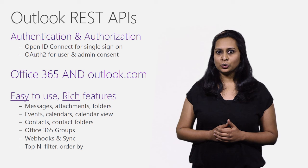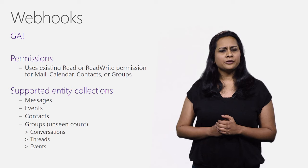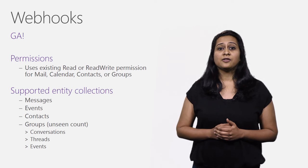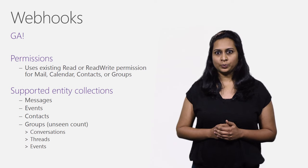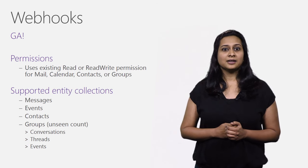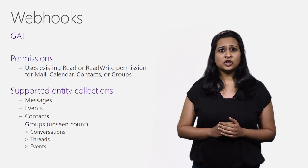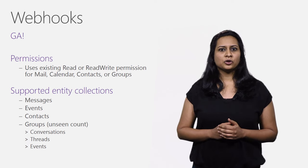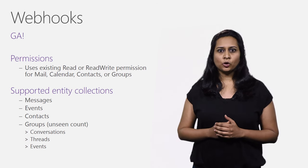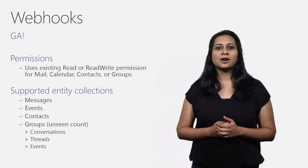I am now going to walk you through some of the features I mentioned earlier. Webhooks — this Notifications feature has been in preview since April of this year, and we are now GA-ing this feature in V2.0. It uses existing permissions that the app has and is available for messages, events, contacts, and groups. This feature eliminates the need for the app to keep polling for any changes to entities in the mailbox.